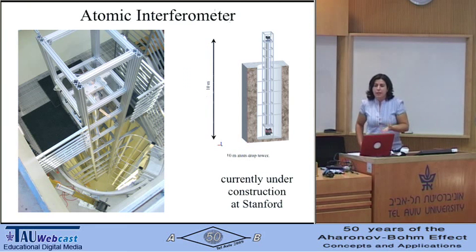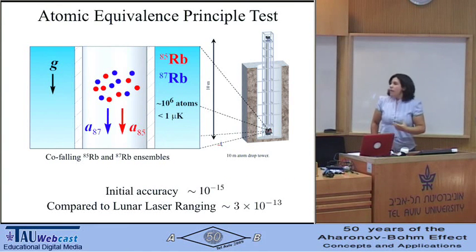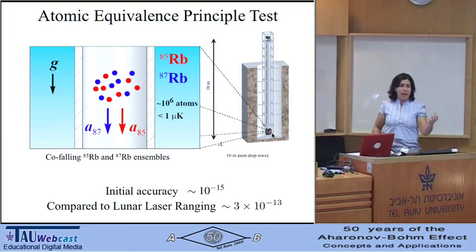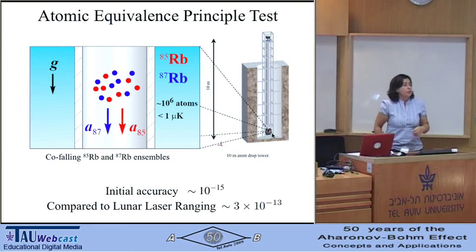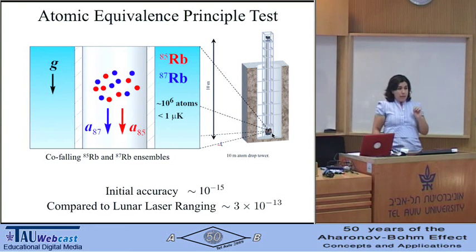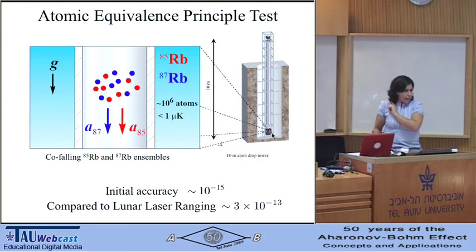This is something that will be done very soon at Stanford. An experiment has been built in the basement of the physics department at Stanford University. The first thing it will do is test the equivalence principle. They will cool isotopes of rubidium-87 and rubidium-85 below temperatures of micro-Kelvin, launch them vertically in the gravitational field of the Earth, and measure the acceleration by which they fall — initially with an accuracy of one part in 10^15. This is already a factor of 300 better compared to current experiments involving lunar laser ranging and an experiment at the University of Washington in Seattle.